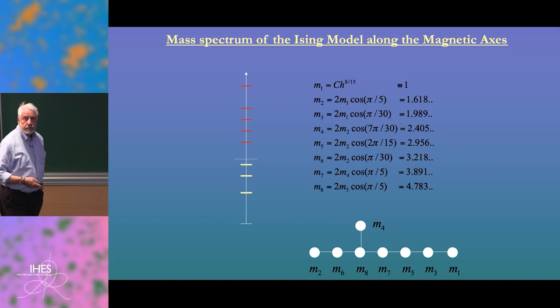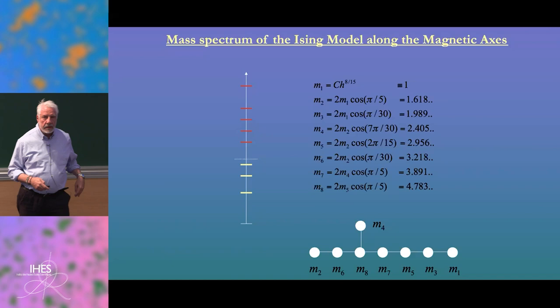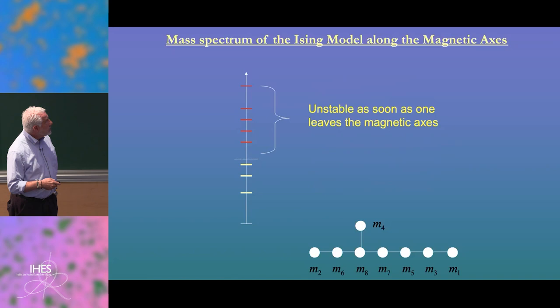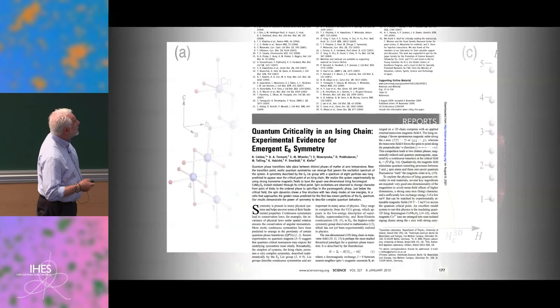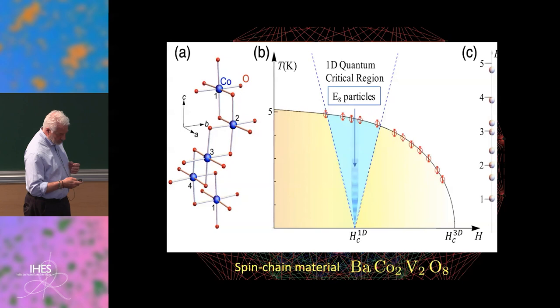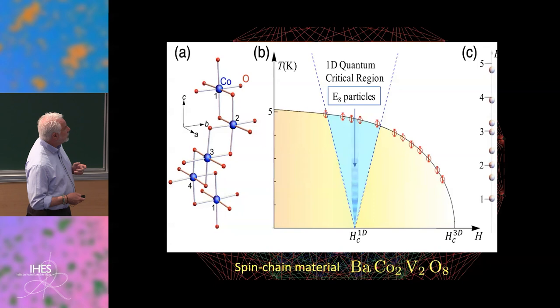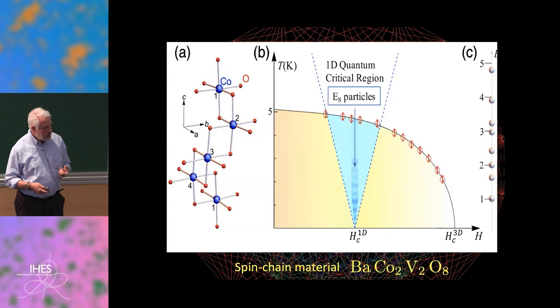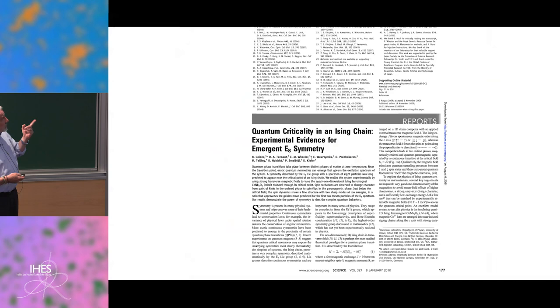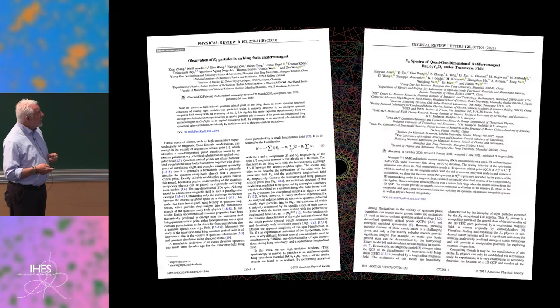If you look at the correlation function, it's decaying exponentially and these are the exponential coefficients. Starting from the first group in Oxford by Alan Tennant, Coldea and others, people realized spin chain materials able to simulate this class of universality. This was the first paper in Science. More recently, my collaborators in Shanghai were able to grow this crystal with high precision and make scattering experiments, probing the correlation function in momentum.